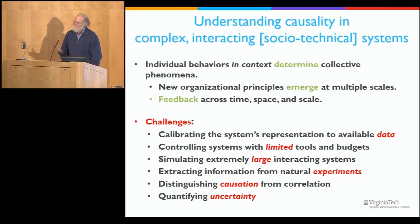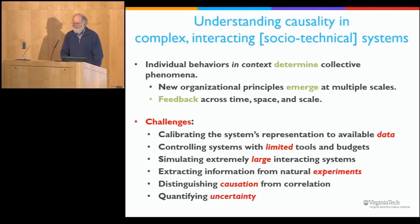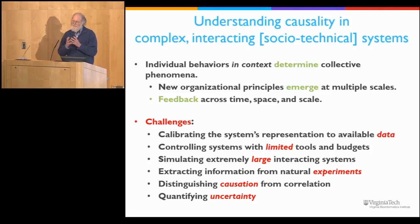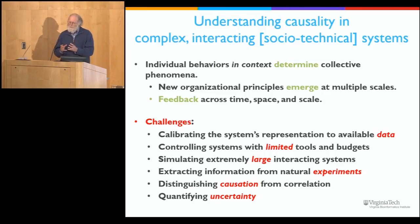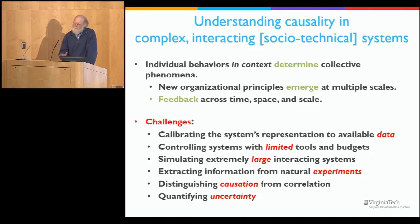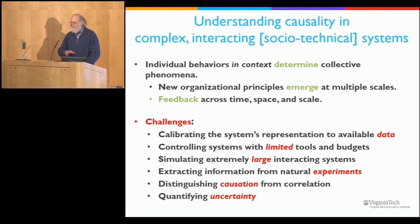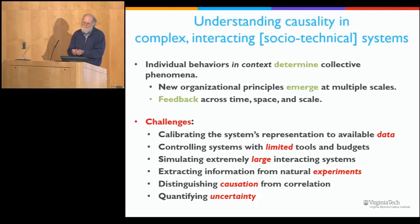All of this relies on the ability to represent causal mechanisms at work in very complex interacting systems. You can think of individual behaviors — we spend a lot of time in reductionist science trying to identify how things work when you pull them apart. But what really matters is how those individual behaviors operate in the context of whatever is going on around them. When you really represent the context as well as the individual behaviors, you get collective phenomena that emerge at all kinds of different scales, with feedback between the large and small scales, long and short time scales, and large and short spatial scales. This is what makes the system so complex.